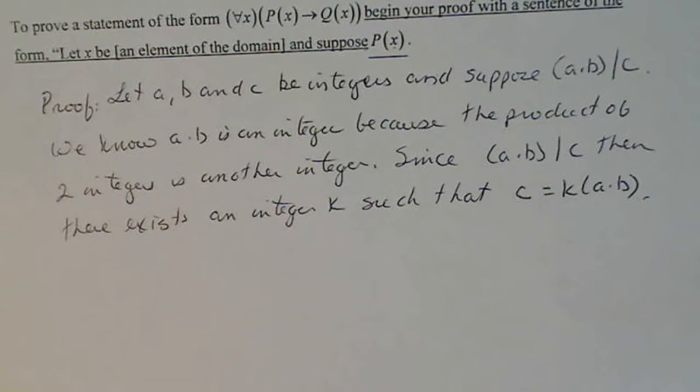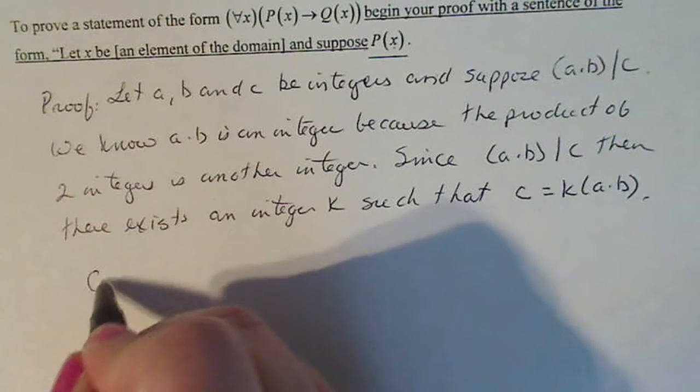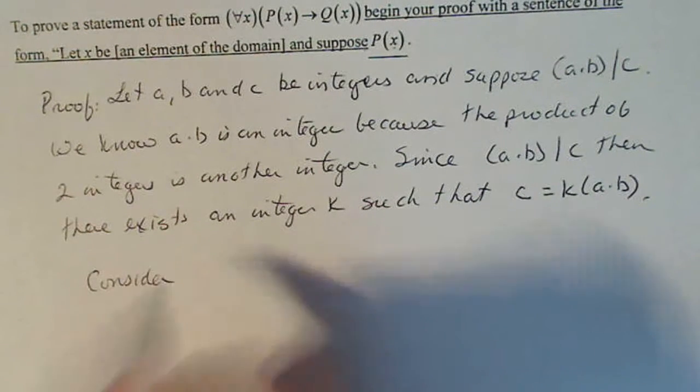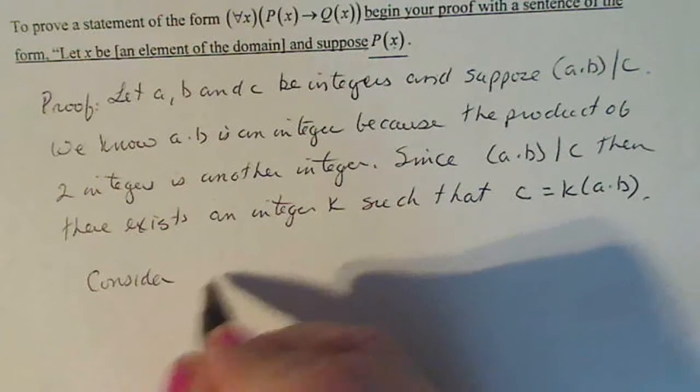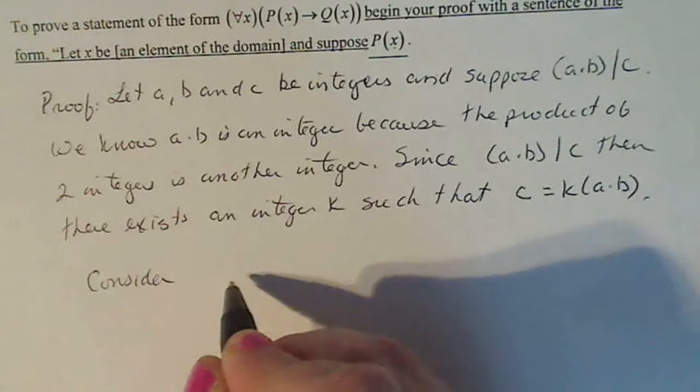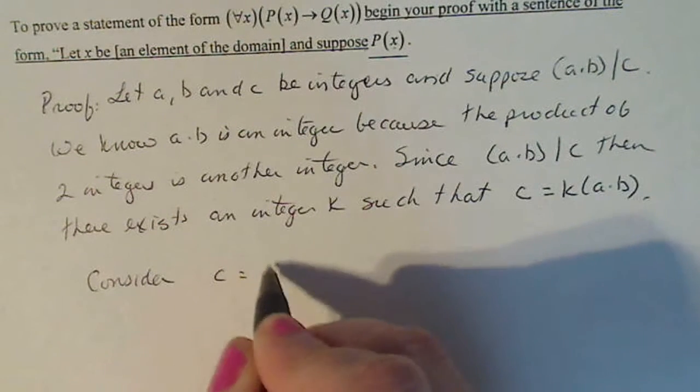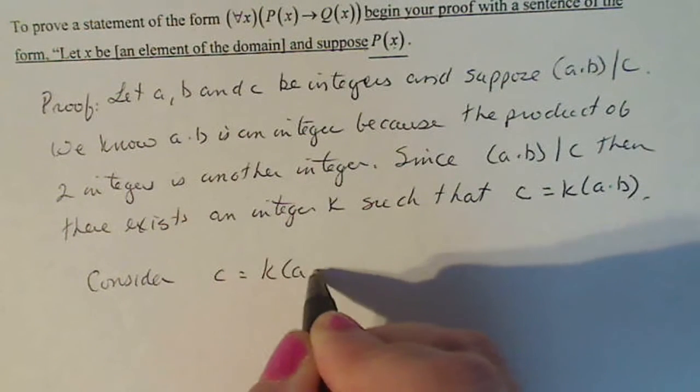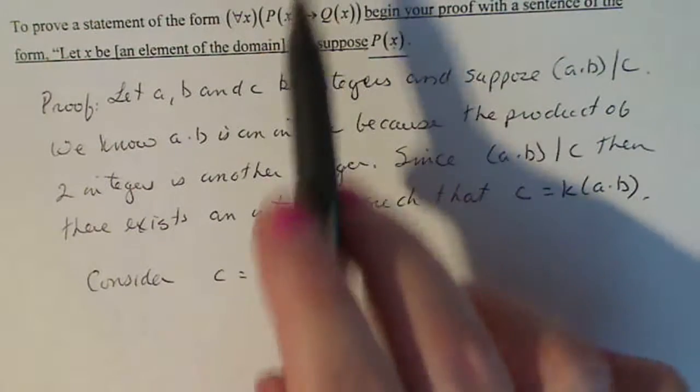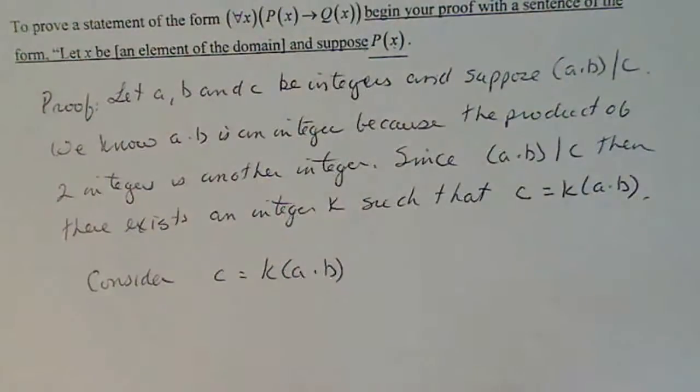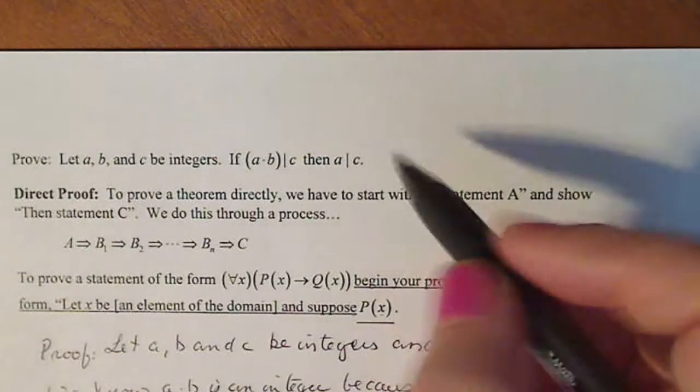All right, so let's consider this relationship c equals k times a times b. If a divides c, let's think about this. If a divides c, there exists some constant, say n, that's an integer where n times a equals c.